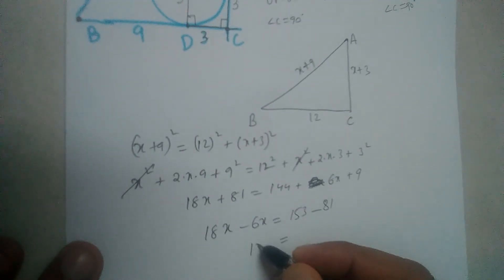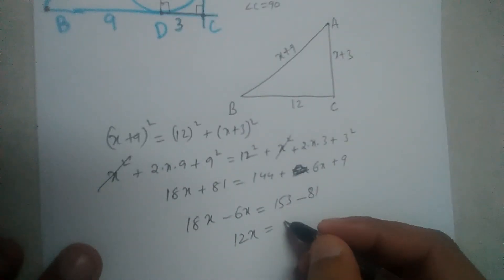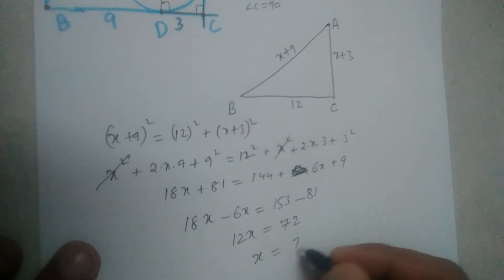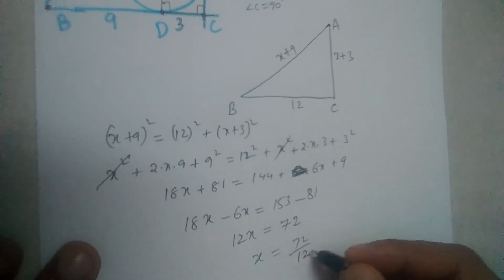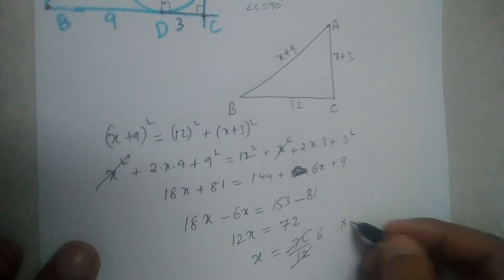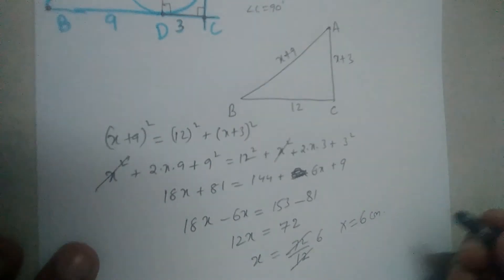This is 12X equals 72, so X equals 72 divided by 12, which gives us 6. X equals 6 centimeters.